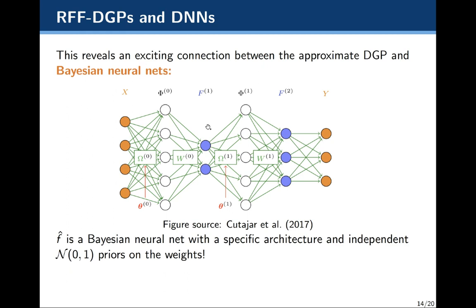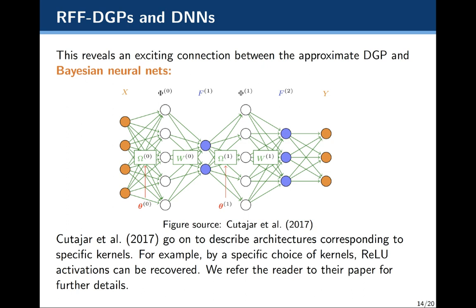The notation is a little different because this figure is taken from the paper, but this is a Bayesian neural net with a specific architecture and independent priors on the second set of weights — independent zero-one Gaussian priors on these weights and spectral density priors on the spectral weights. The authors go on to describe particular architectures which correspond to specific kernels, and they choose some specific kernels that make computation a bit easier, in which you can use ReLU activations.